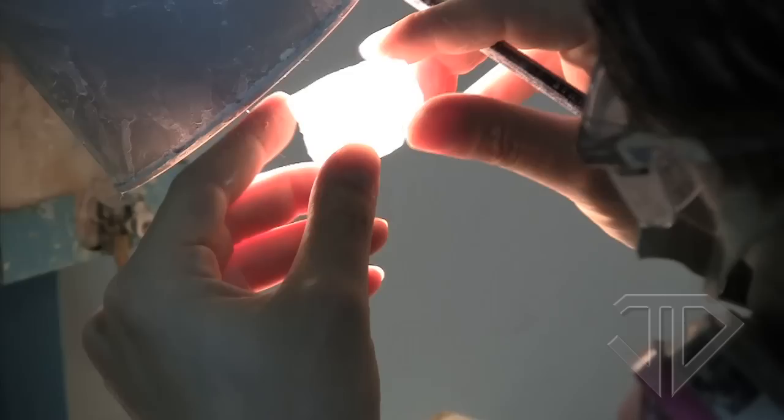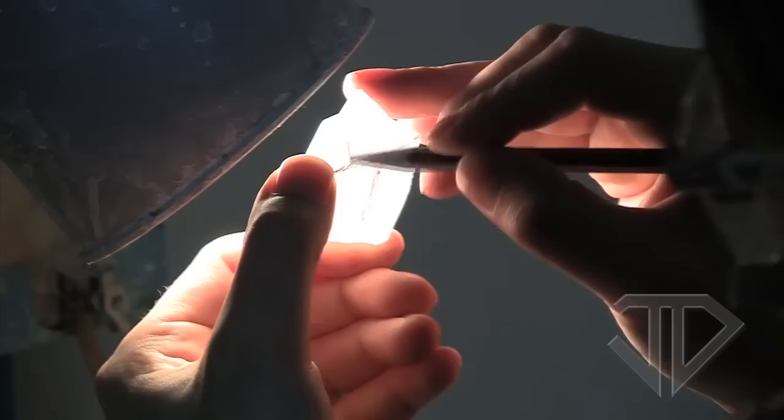If sawing is necessary, then lines are marked where the gem will be sawed. These lines are based on inclusions, cracks, the color and shape of the gem rough.